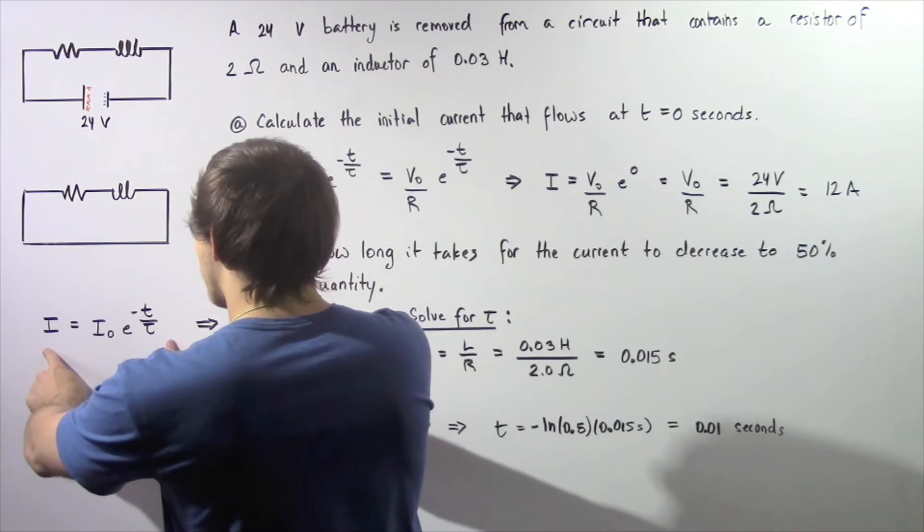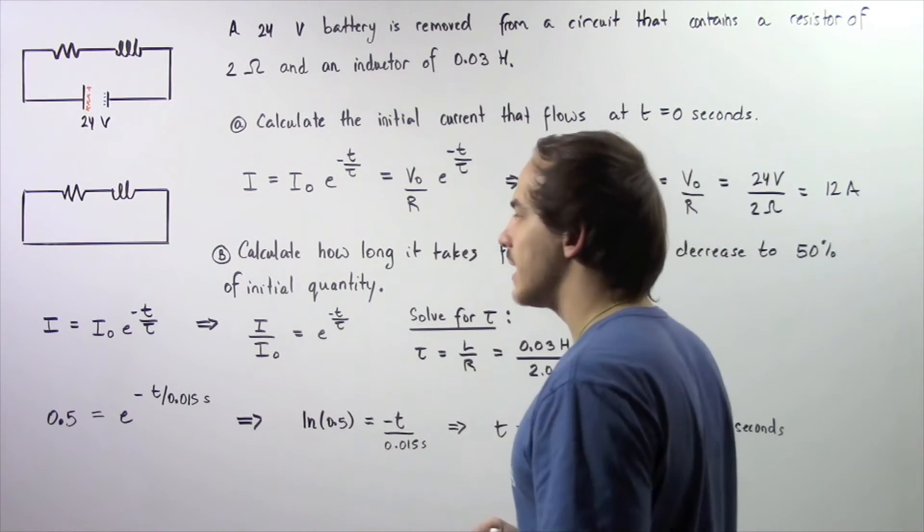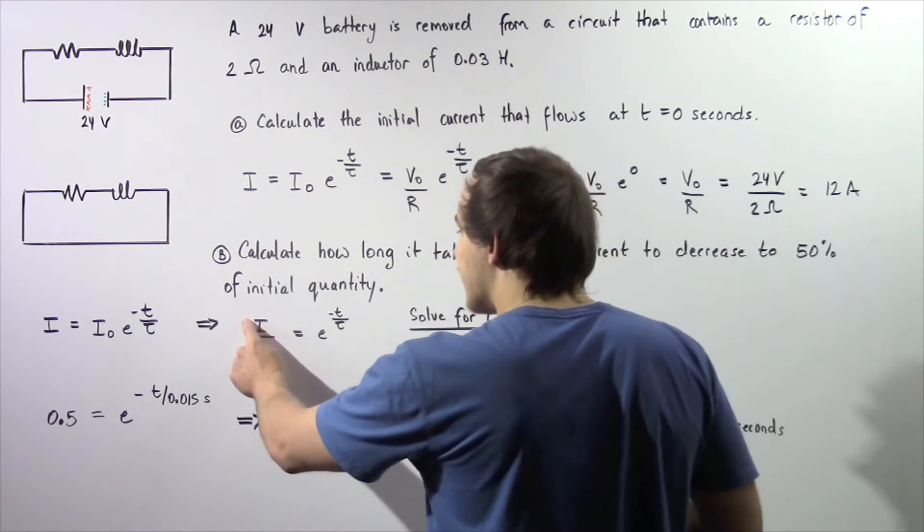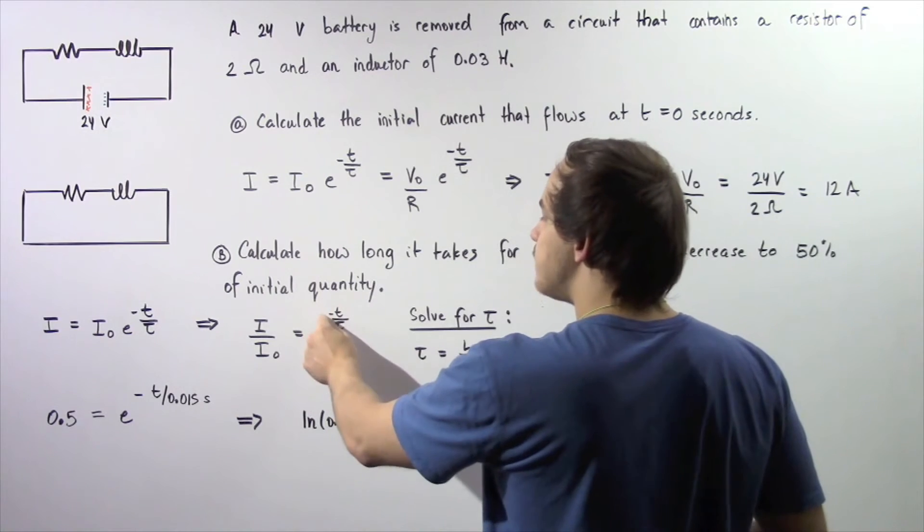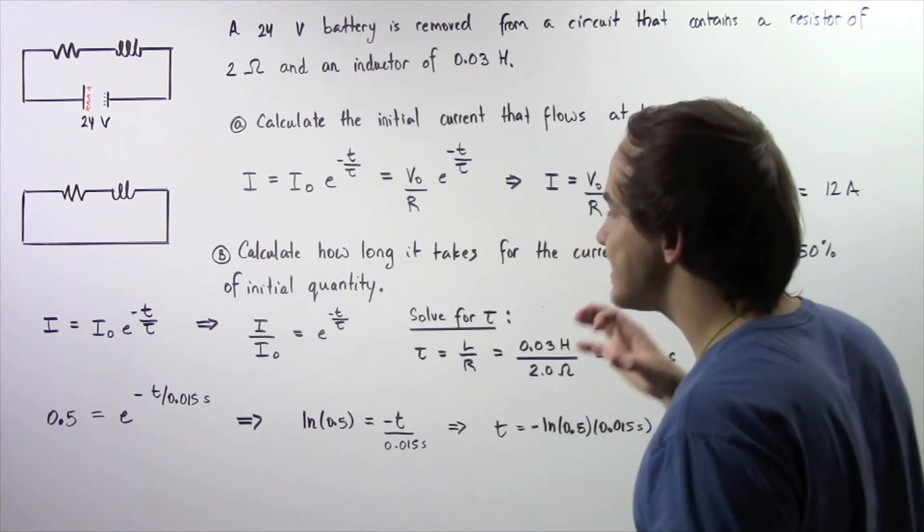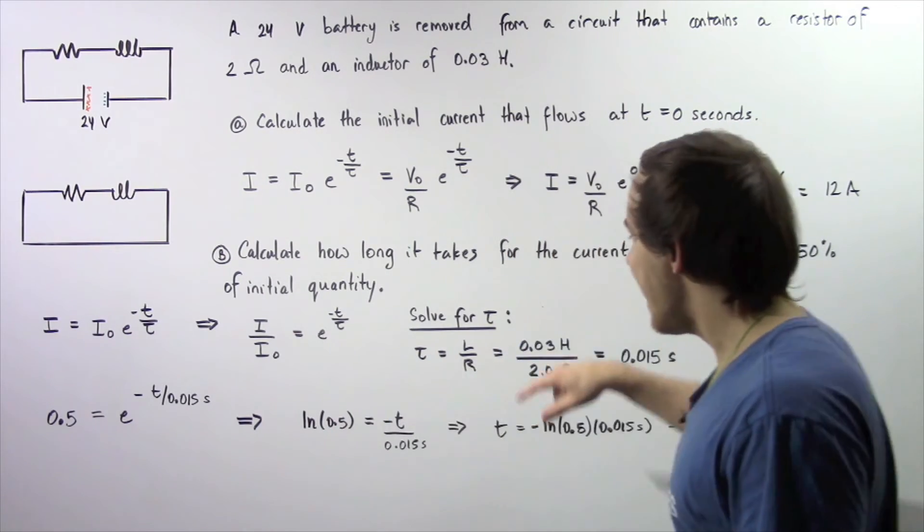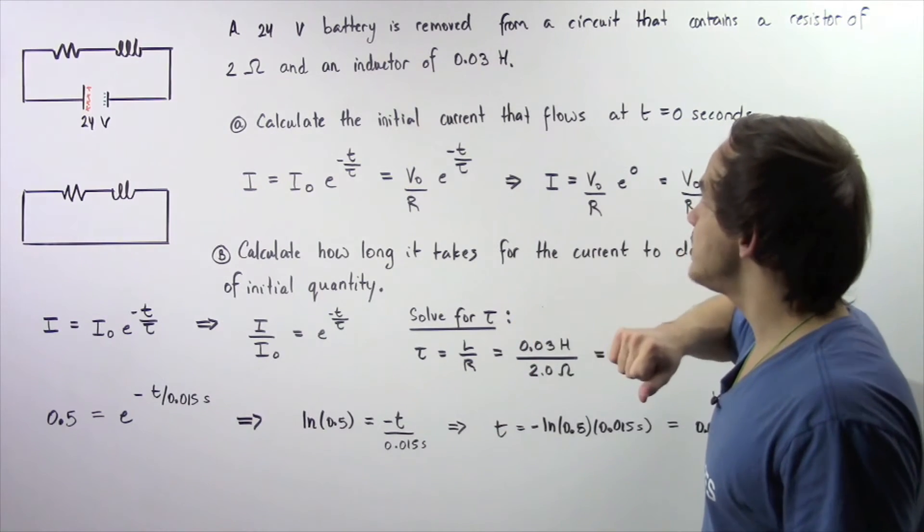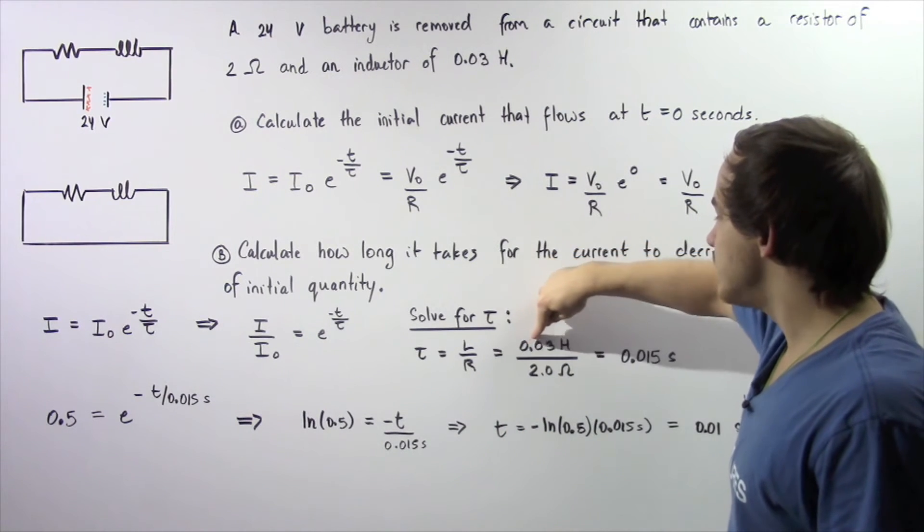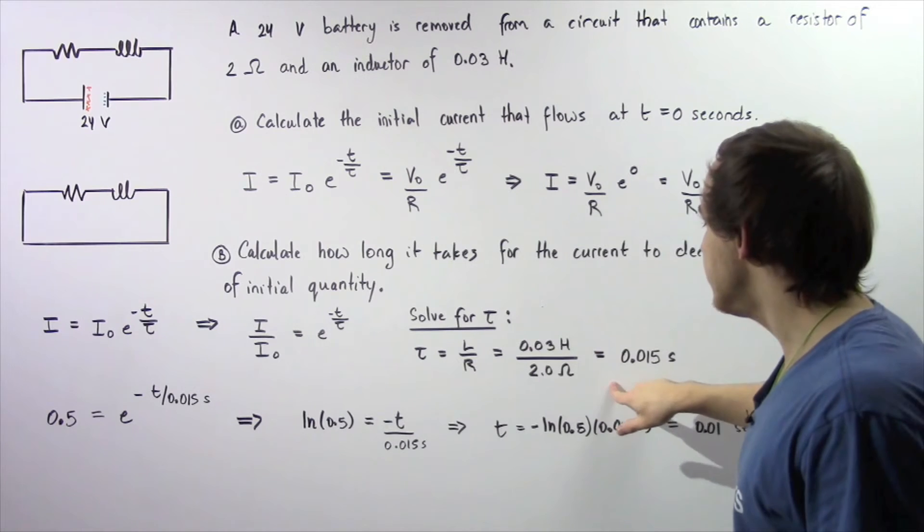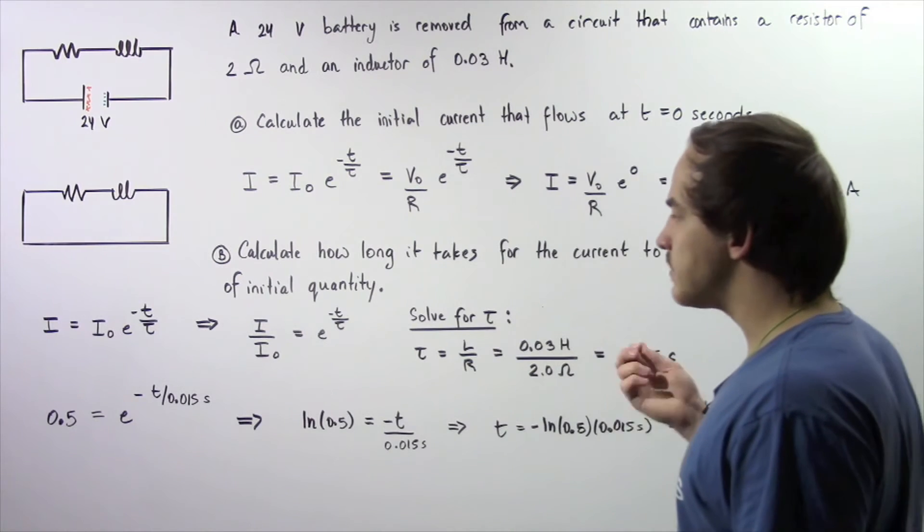Once again, let's begin with this equation and rearrange. Let's bring all the I's to one side, to the left side of our equation. So we have I divided by I0 is equal to E to the power of negative time divided by tau. Let's begin by solving for tau. Tau is simply our time constant, equal to L divided by R. L is given by 0.03 Henries and R is 2 ohms. 0.03H divided by 2 ohms gives us 0.015 seconds.